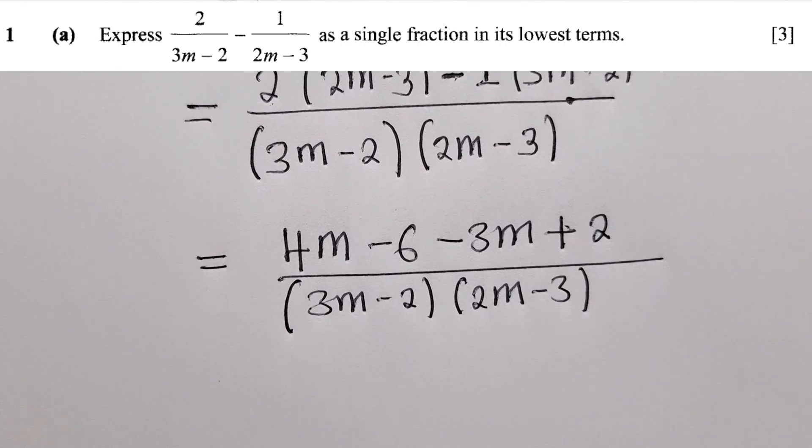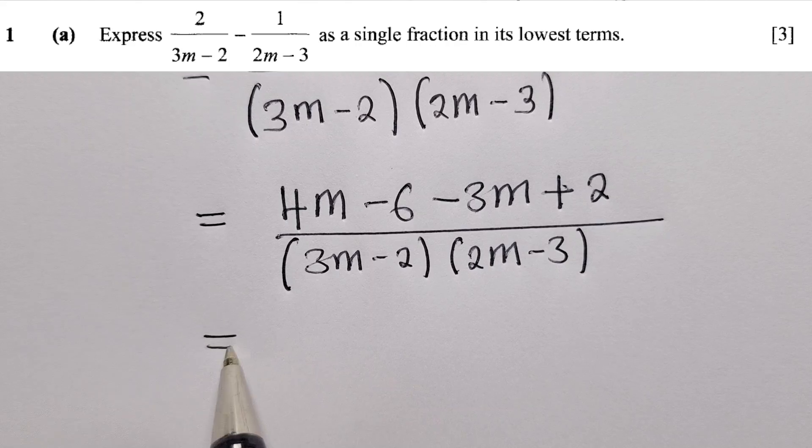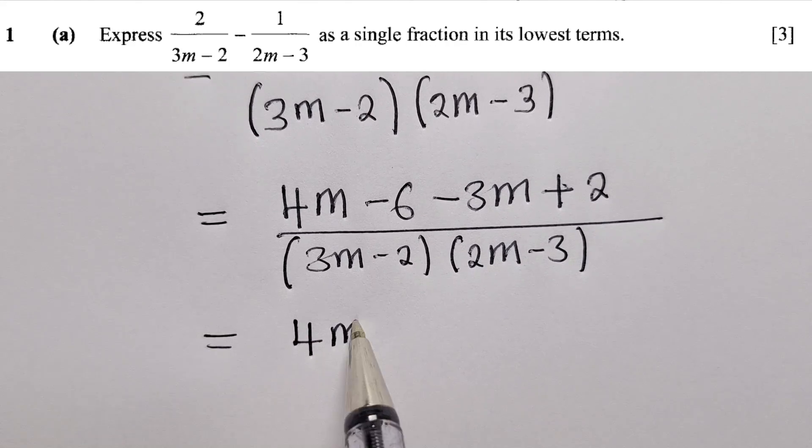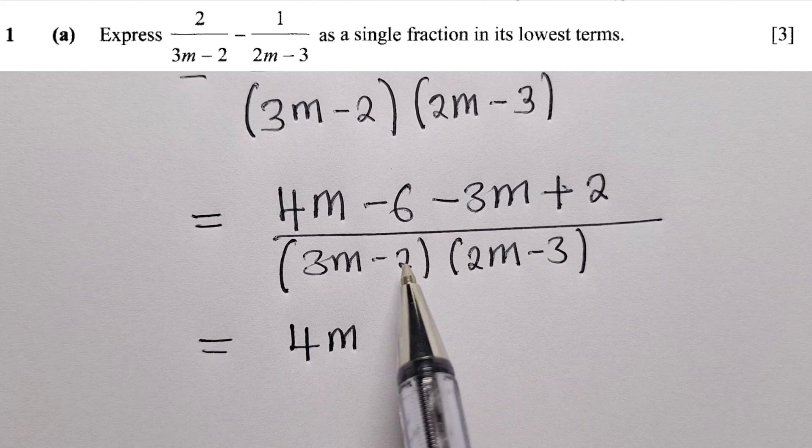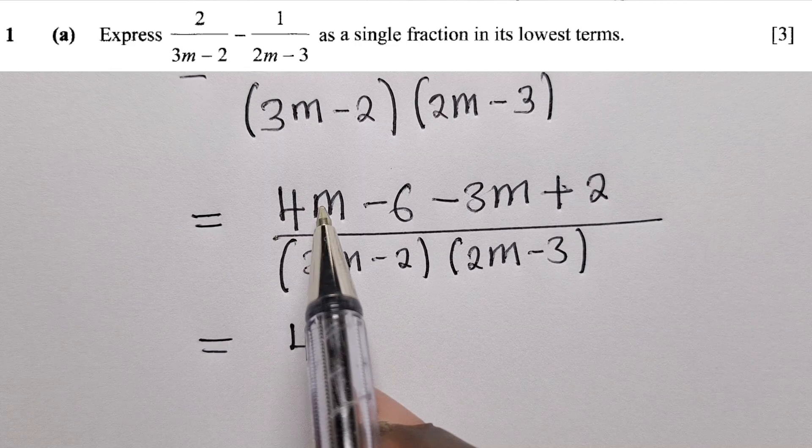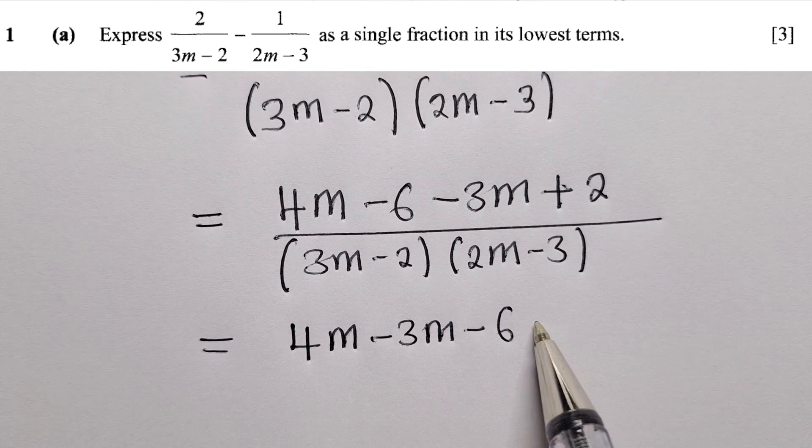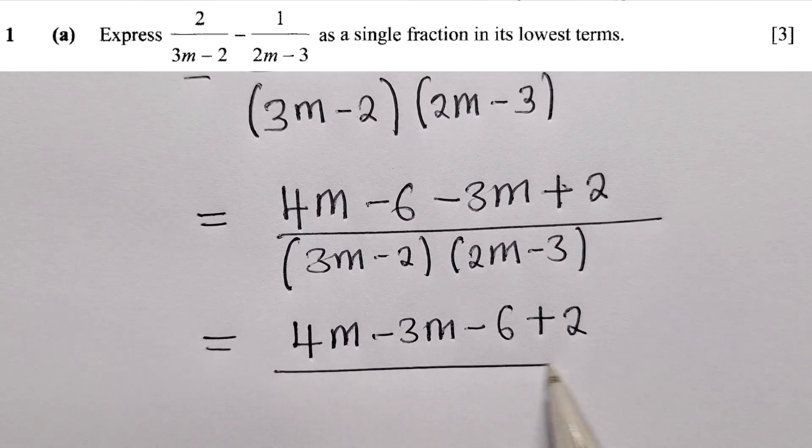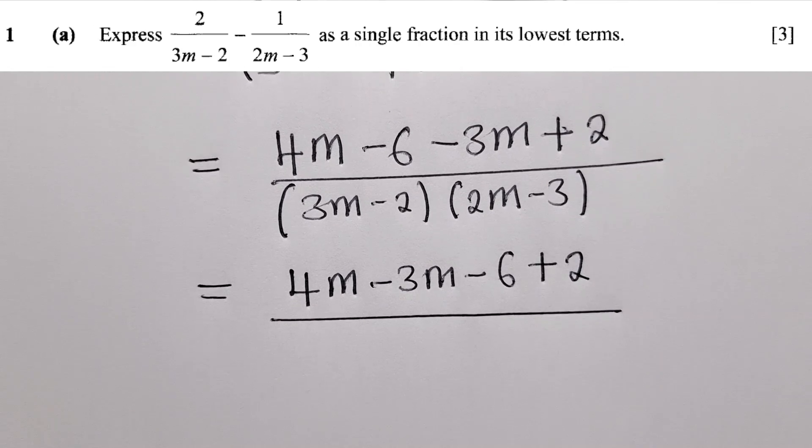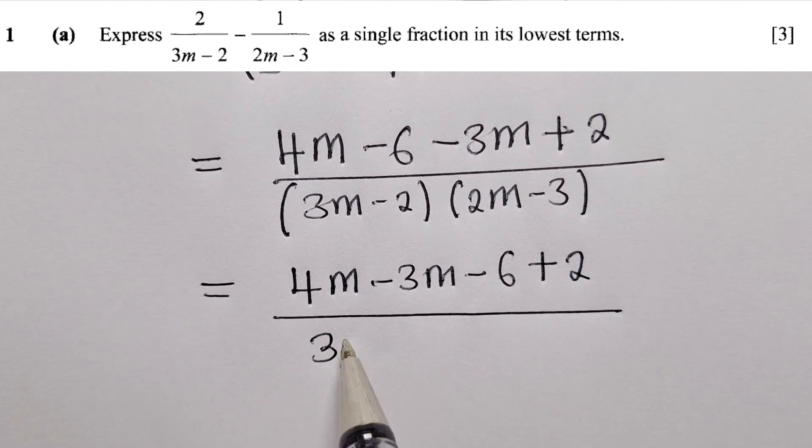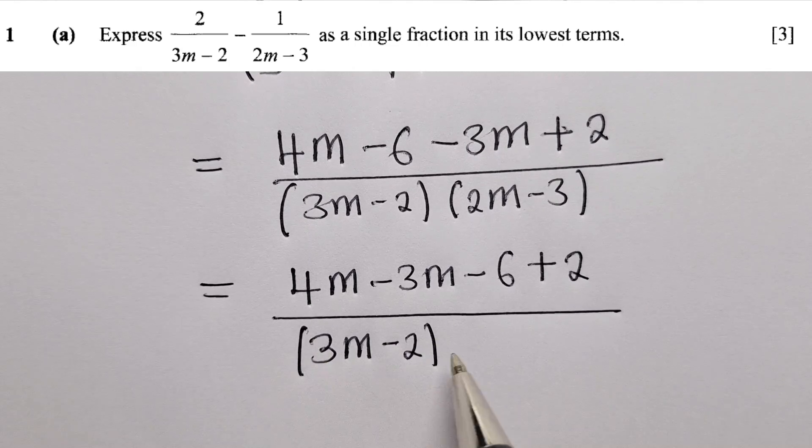From this stage we group the like terms on top. For the denominator, just maintain it. So we have 4m minus 3m, and then minus 6 plus 2, all divided by this denominator.